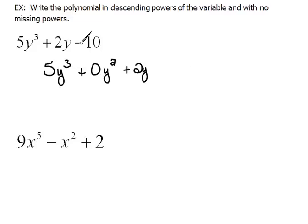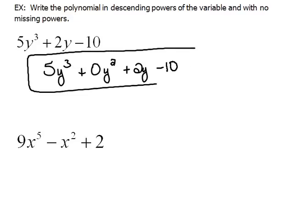3, 2, 1, nothing. So our plain number is negative 10. That is in perfect descending order.